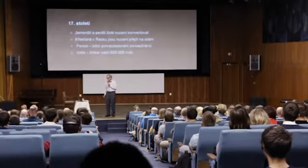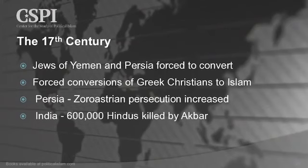In the 17th century, more Jews are forced to convert in Yemen and Persia. There are forced conversions of Greek Christians. The Zoroastrian persecution increases — one of the religions that will be annihilated is Zoroastrianism, which was in Persia. In India, 600,000 Hindus were murdered.